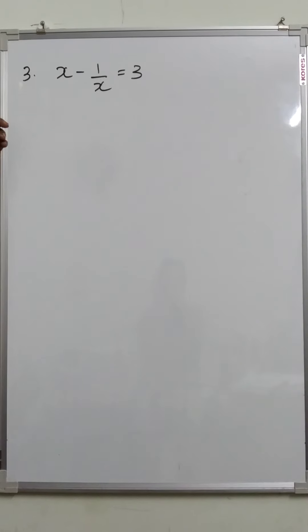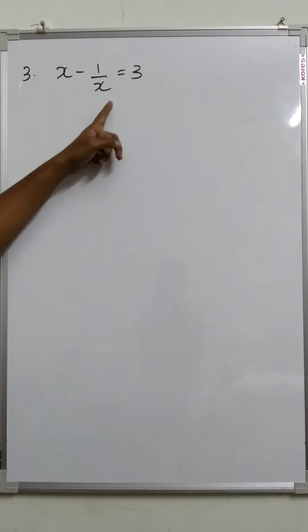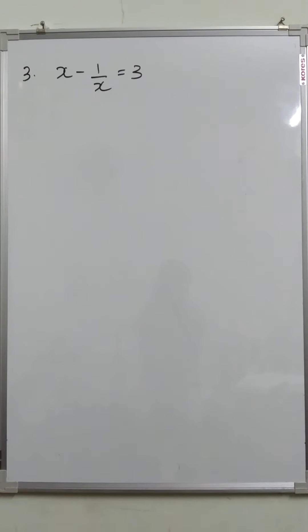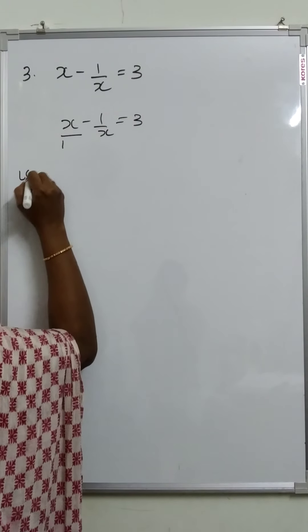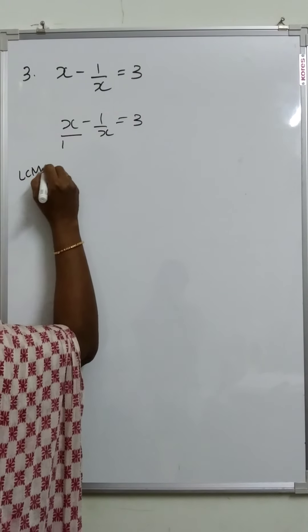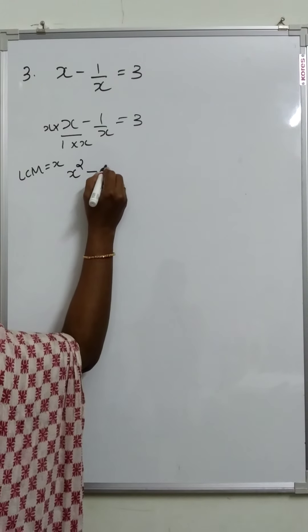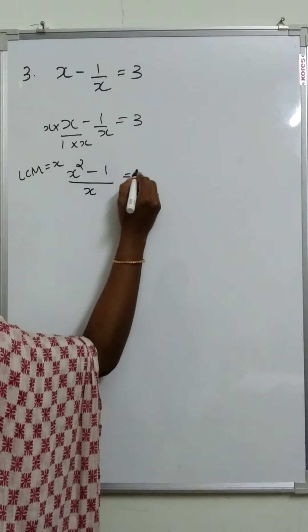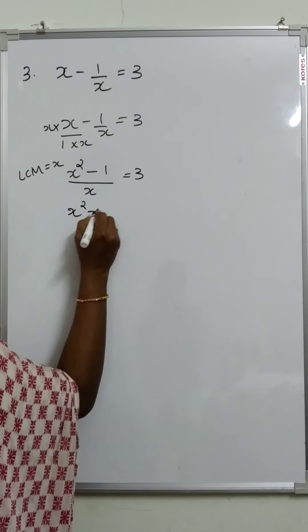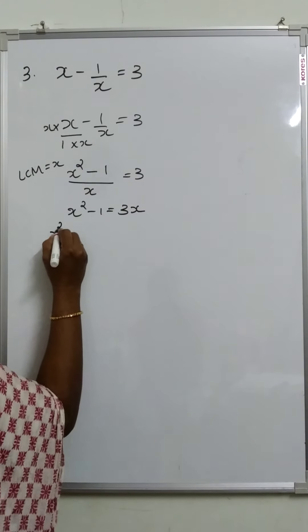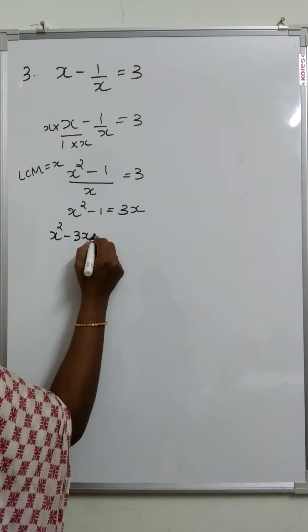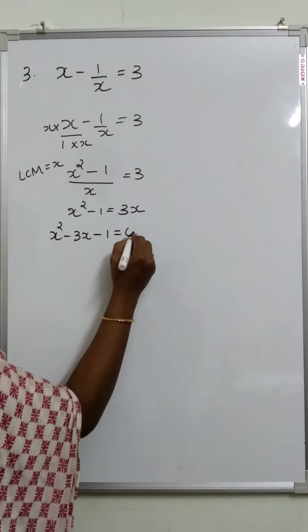That is the third question in your exercise: x minus 1 by x is equal to 3. Taking LCM, the LCM is equal to x. Then the equation becomes x squared minus 1 by x is equal to 3, that is by cross multiplication we get x squared minus 1 equal to 3x, that is x squared minus 3x minus 1 is equal to 0.